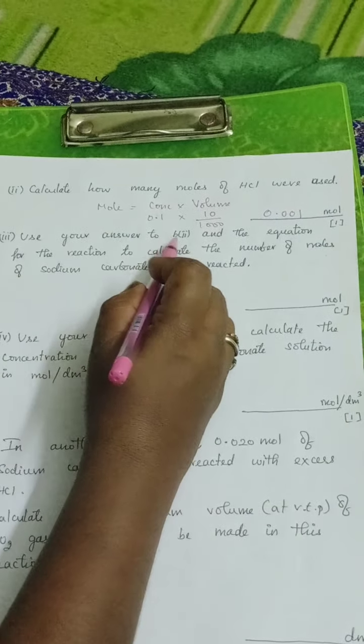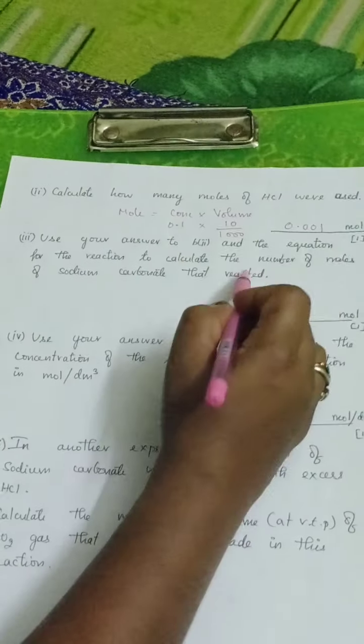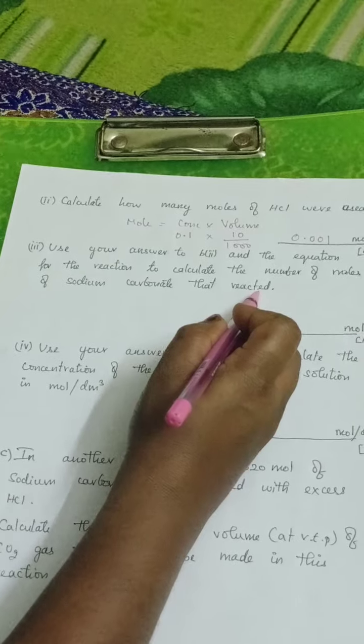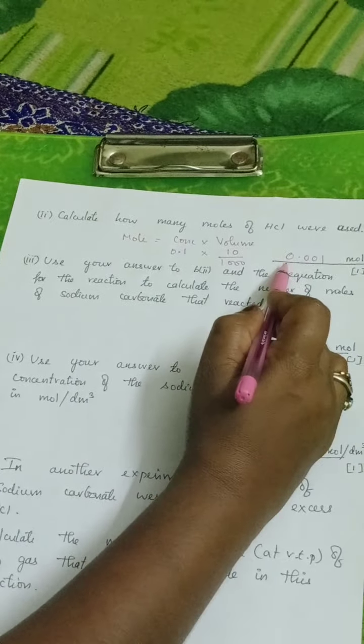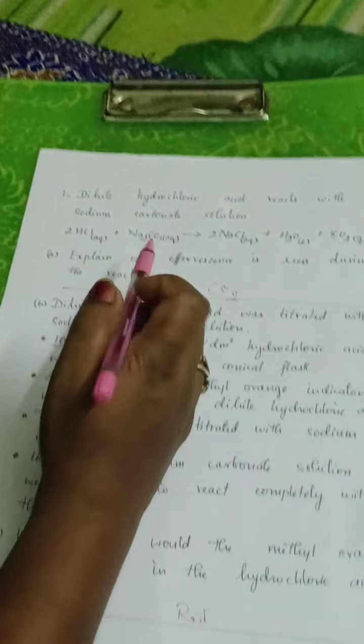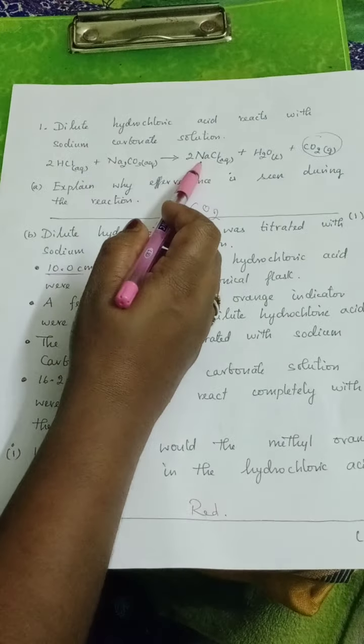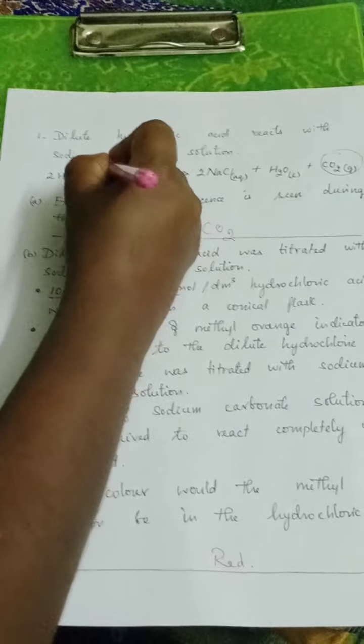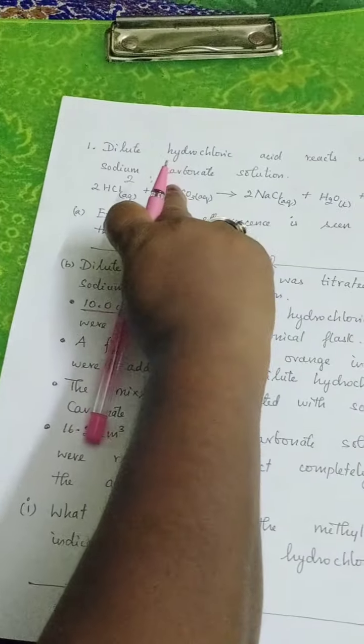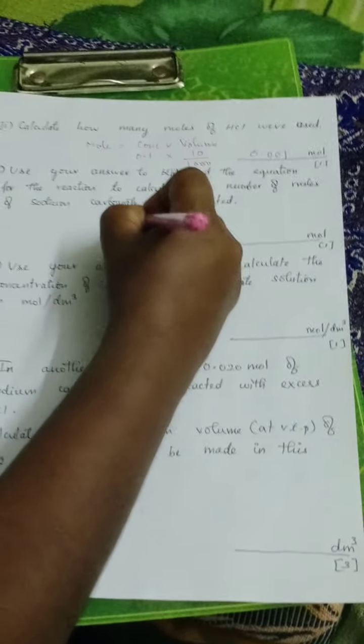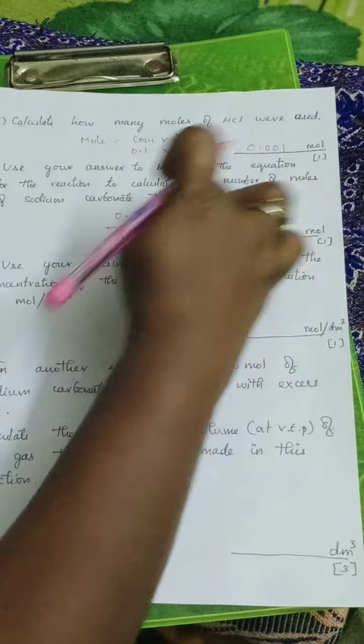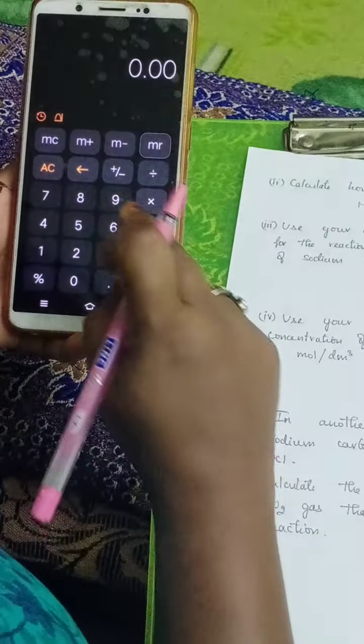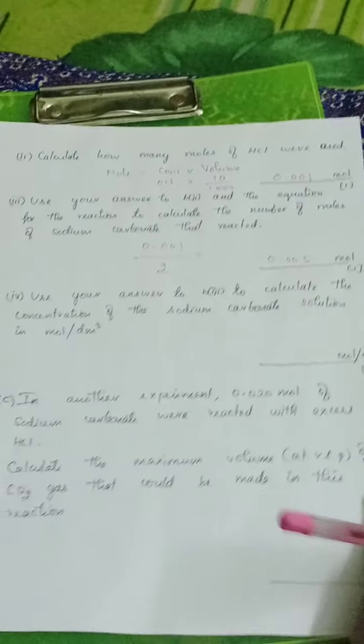Use your answer to B2 and the equation for the reaction to calculate the number of moles of sodium carbonate that reacted. Moles of HCl here is 0.001 mole. Two moles of HCl reacts with one mole of Na2CO3, so the ratio is 2 to 1. If this is 2 moles, this will be 1 mole. In that case, if this is 0.001, that means this divided by 2. Half of this is the mole of sodium carbonate. So 0.001 divided by 2 equals 0.0005 mole.